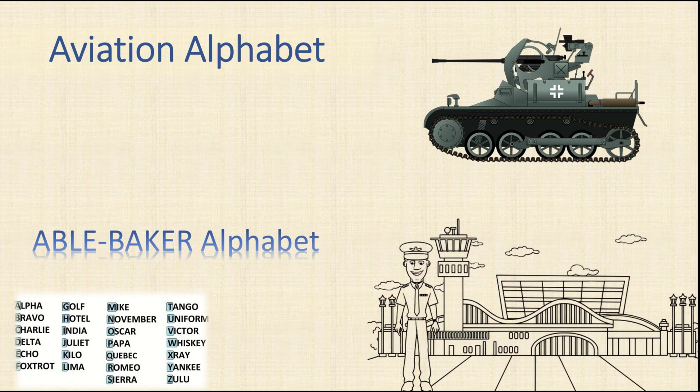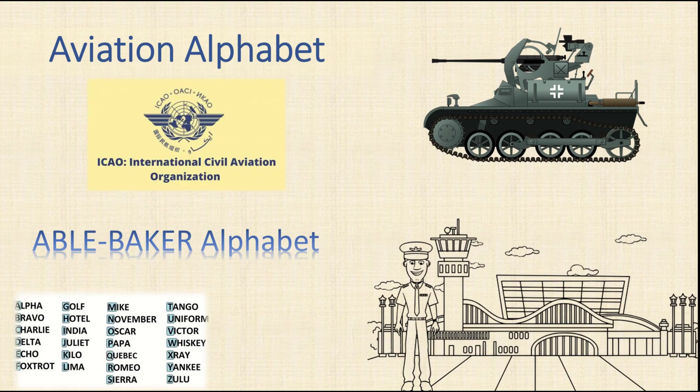The alphabet was known as the Abel Baker alphabet. However, as aviation developed and international flights and operations became more common, the use of different alphabets began to cause confusion.